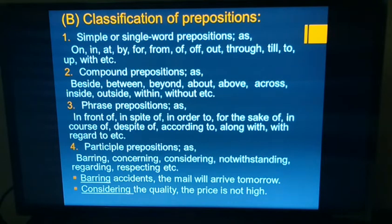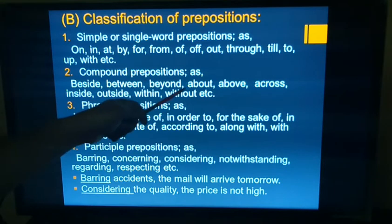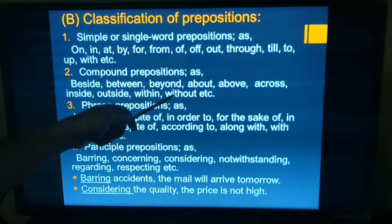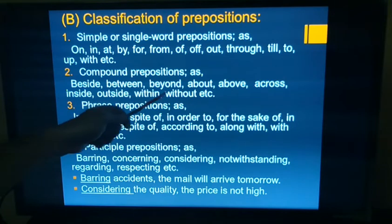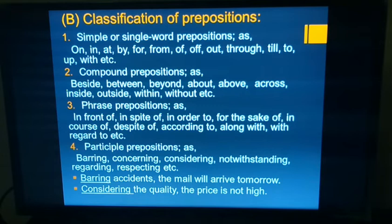Second, compound prepositions — two words combined to make one preposition. Examples: beside, between, beyond, about, above, across, inside, outside, within, without, etc. For instance, we don't use 'with' and 'in' separately — we combine them as 'within'. Similarly, 'without' and 'outside' are single combined words used as prepositions.